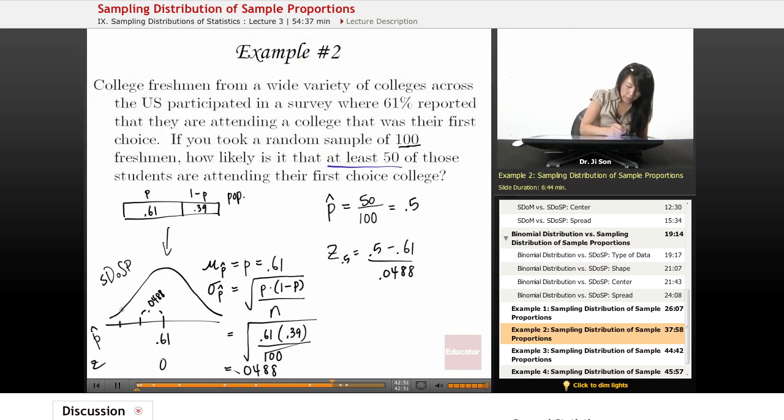So here we're somewhere like this, negative 2.25, and this is 0.5. And we want to know how likely is it that at least 50 of those students are attending that first choice college. When we say at least, this is the lower limit. That's the least. And so we're really looking for this whole thing.